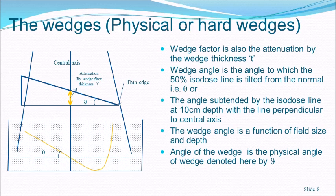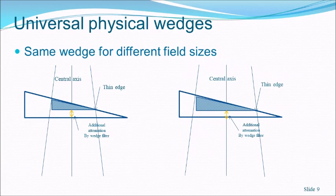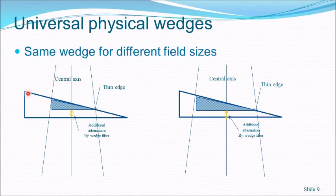The wedge itself has a physical angle — the angle of the wedge — which produces a tilt in the isodose line. Do not confuse the angle of the wedge with the wedge angle; the wedge angle is what matters for treatment planning. In older cobalt unit days, wedges were made for various field sizes, but later it was understood that one large wedge, perhaps 15×20 cm, could serve as a universal physical wedge for smaller field sizes as well.